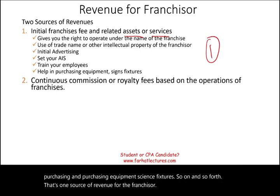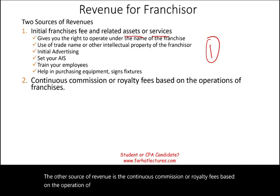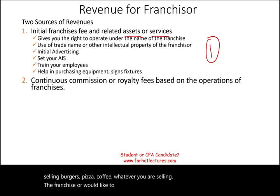The other source of revenue is the continuous commission or royalty fees based on the operation of the franchise. So after you open your doors and start selling burgers, pizza, coffee, whatever you are selling, the franchisor would like to have a fee of that as well. That's called a continuous commission.